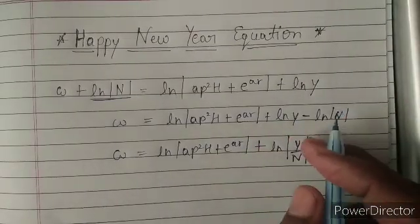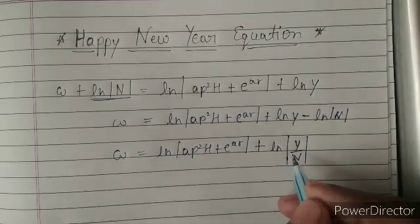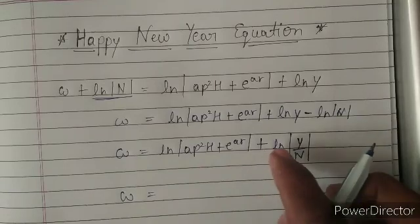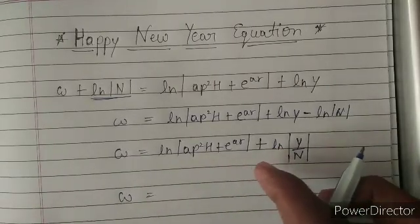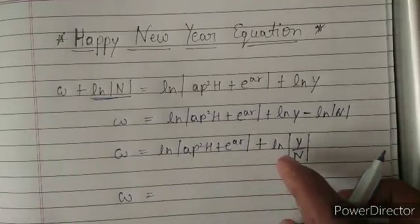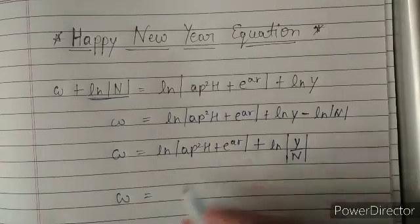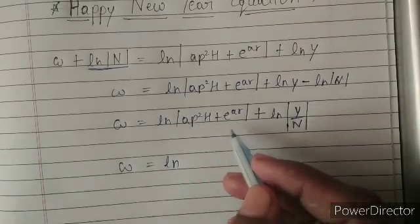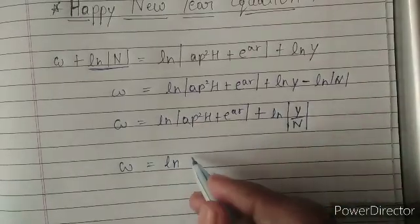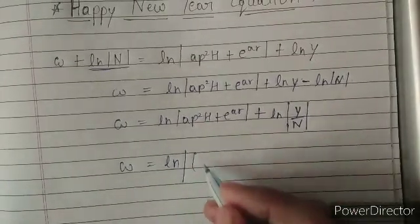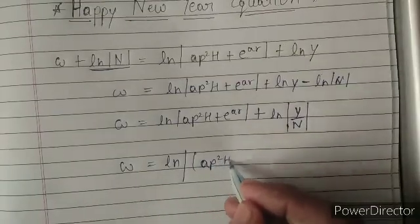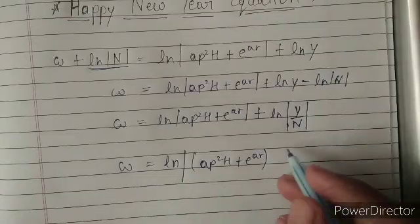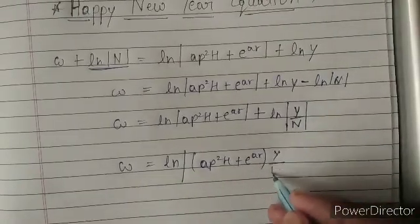When we compile it, it will convert into division. Since these two natural logs are in addition, we take the natural log common and multiply the terms inside, so we write A·P²·H plus e raised to the power A·R, and this whole expression will be multiplied by π over N.